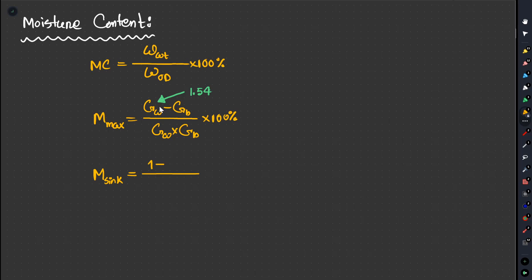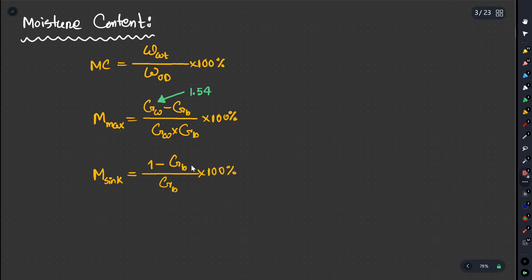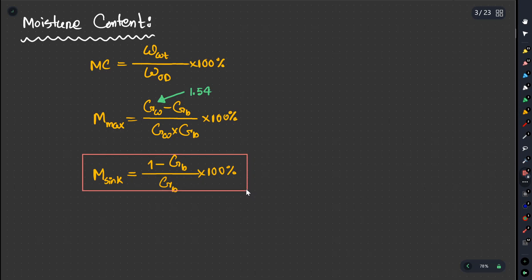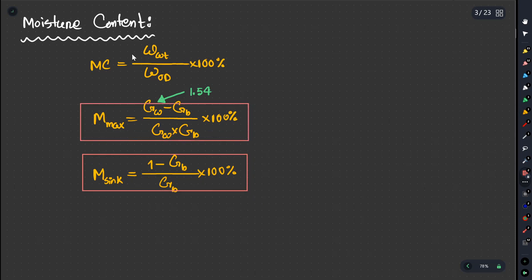We will start with the Panshane equation. That is: 1 equals Gb into 1 equals 100 percent. These three equations are the M sink equation and the M maximum equation. The moisture content of the data is given.